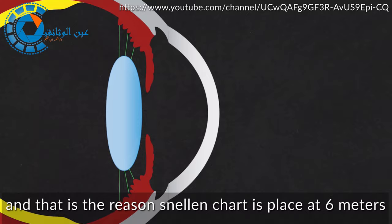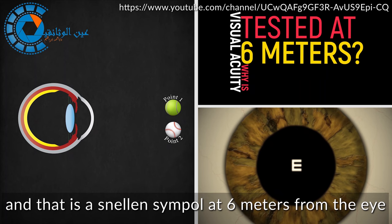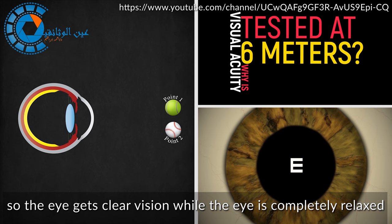And that is the reason Snellen chart is placed at 6 meters from the patient. Why is visual acuity tested at 6 meters? That is an emmetropic relaxed eye. And that is a Snellen symbol at 6 meters from the eye. So the eye gets clear vision while the eye is completely relaxed.